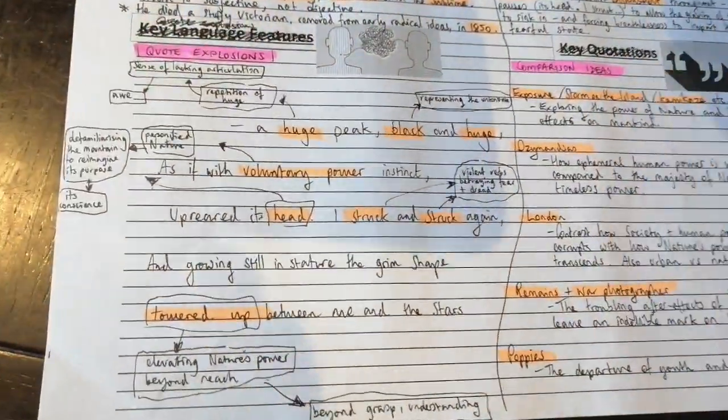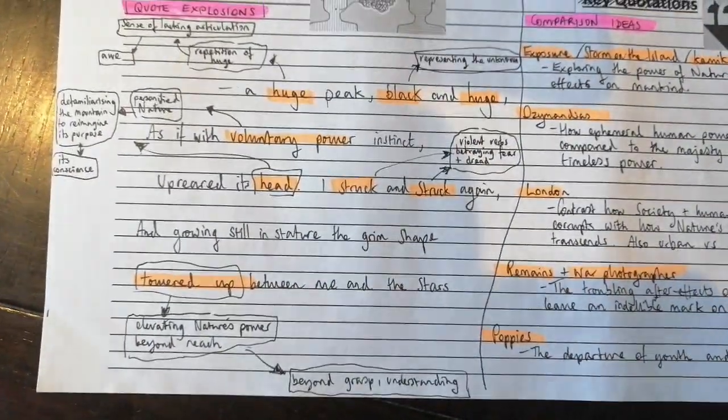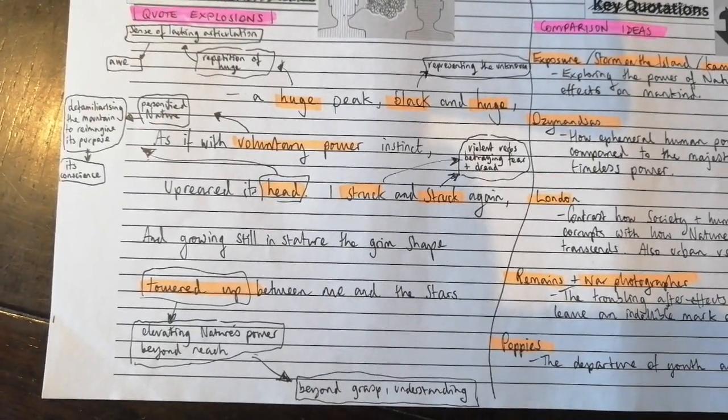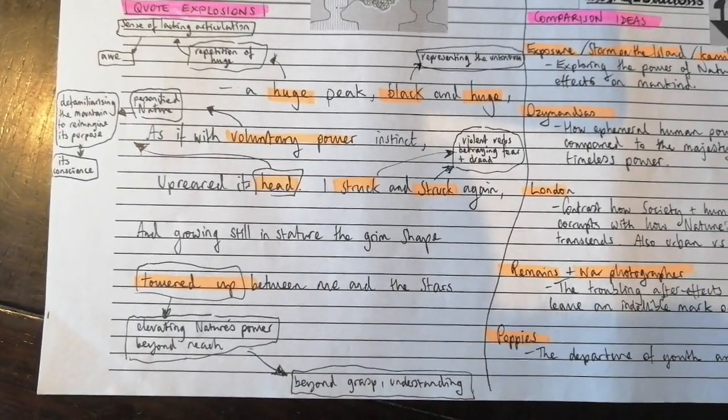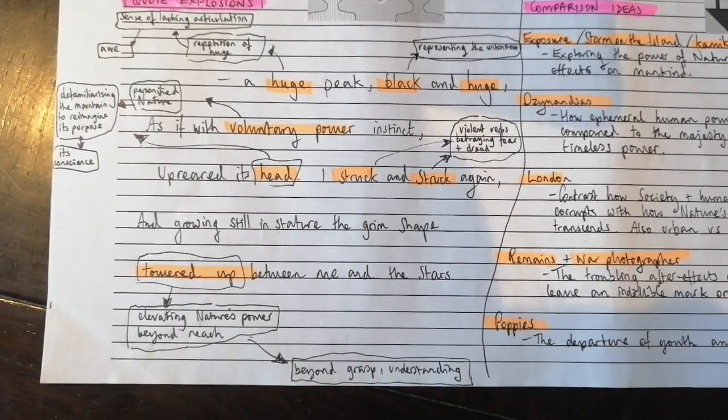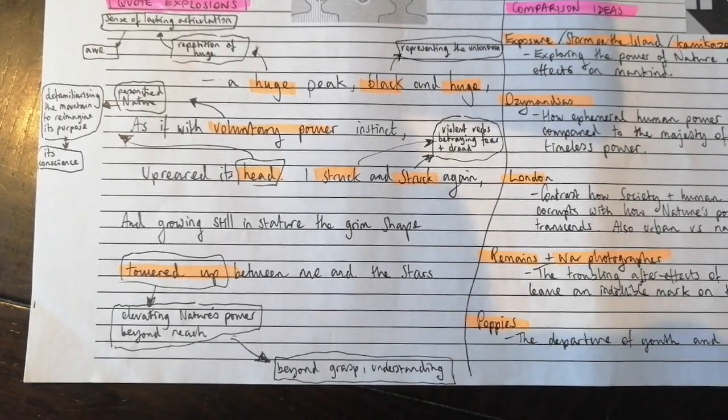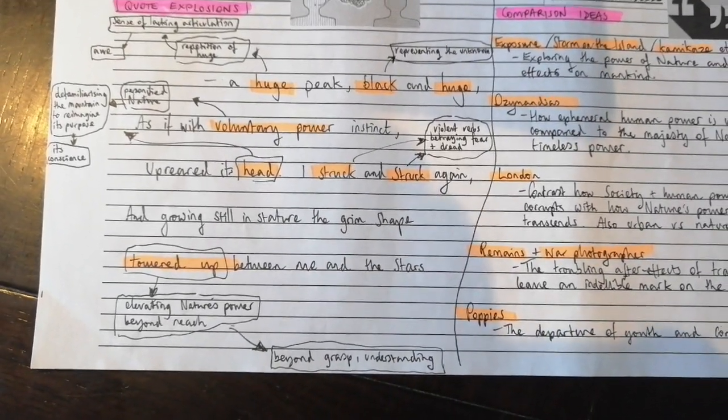So, quote explosions. I've got here, I don't know if you want to do your own ones or choose another part of the poem, but I've got here a huge peak, black and huge, as if with voluntary power instinct upreared its head. I struck and struck again and growing still in stature, the grim shape towered up between me and the stars.